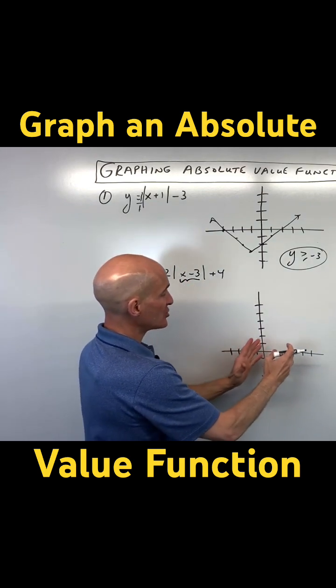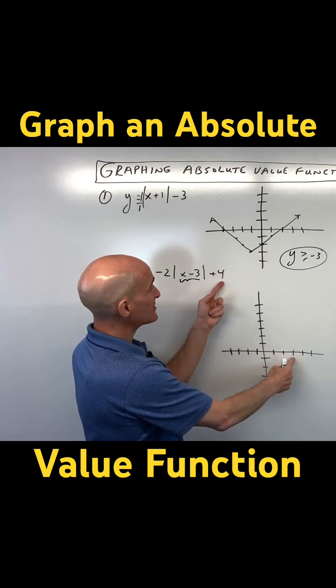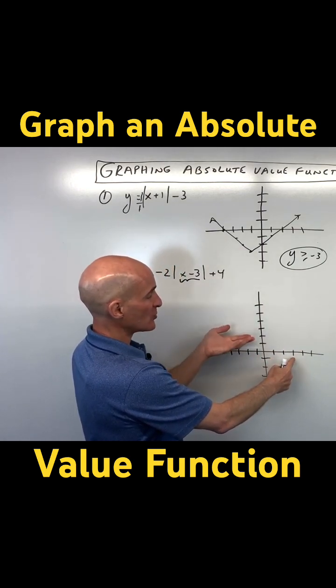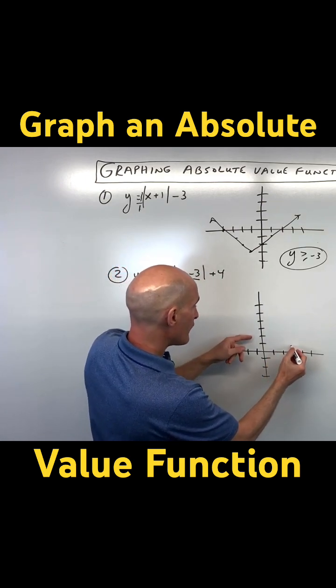The minus 3 is actually going to shift it right 3, and the plus 4 is going to have the same effect as that positive sign. It's going to go up positive 4. So we're going to go right 3, up 4.